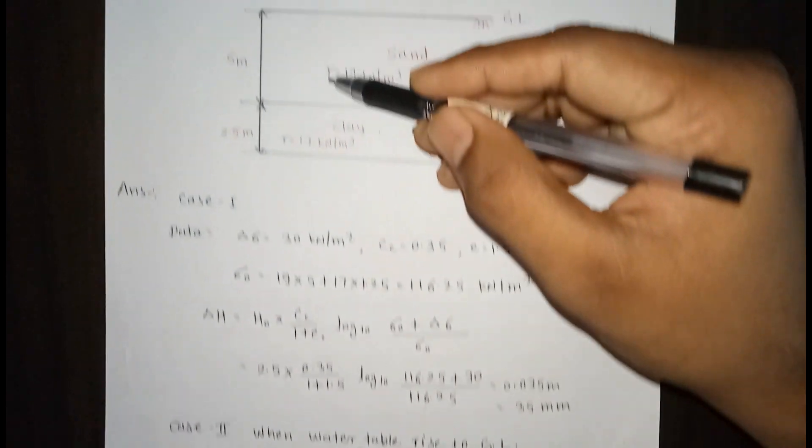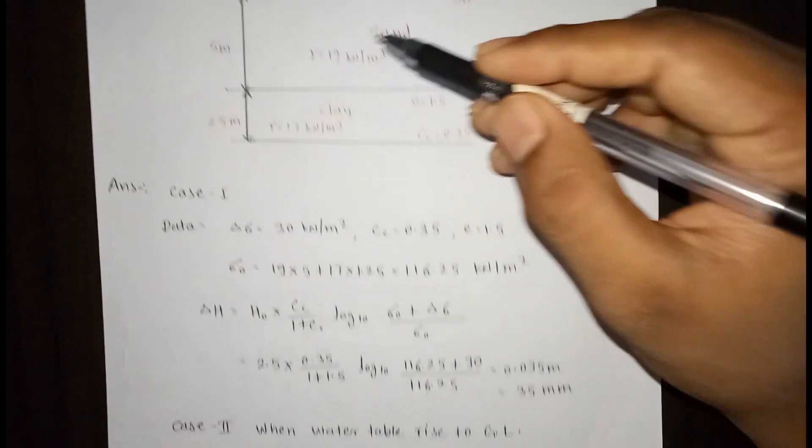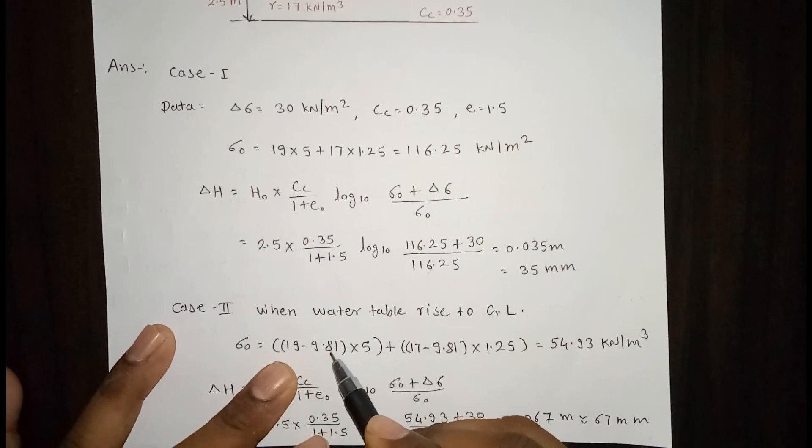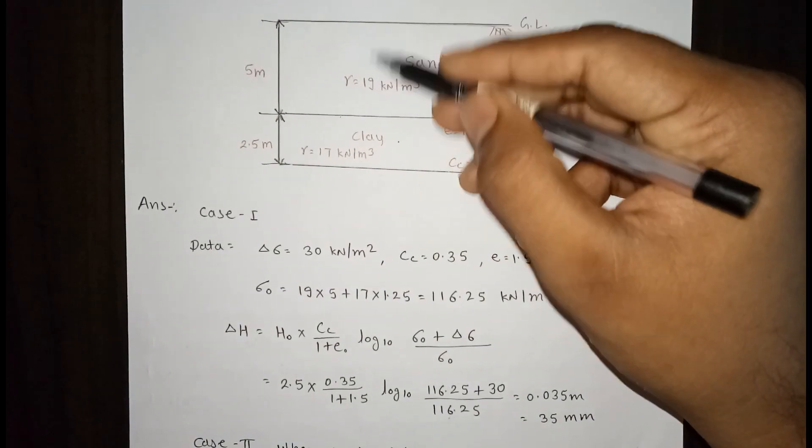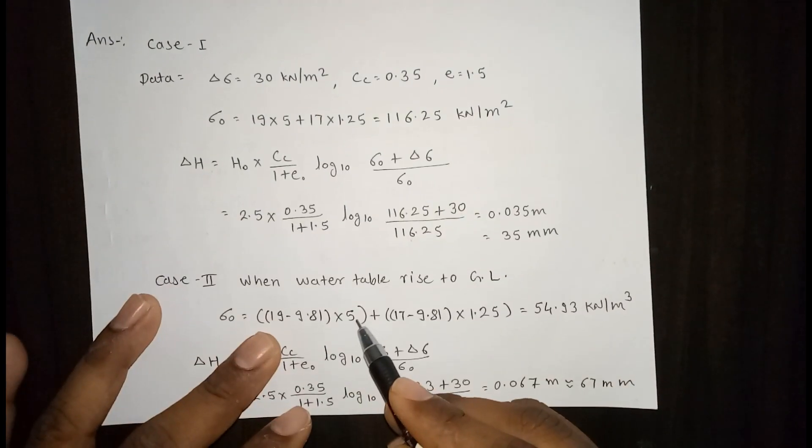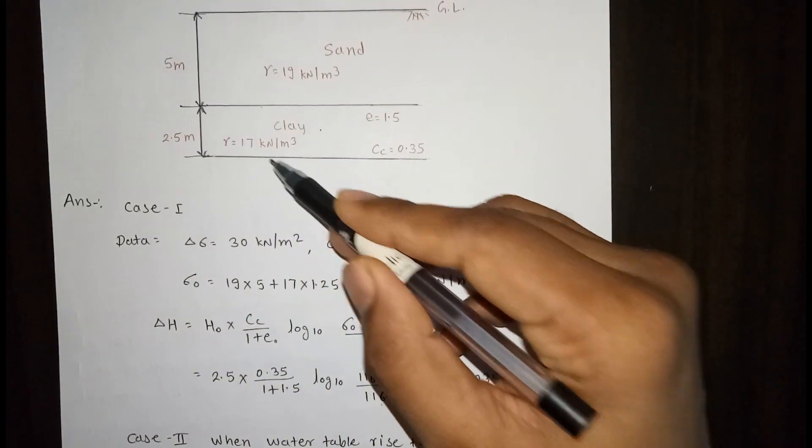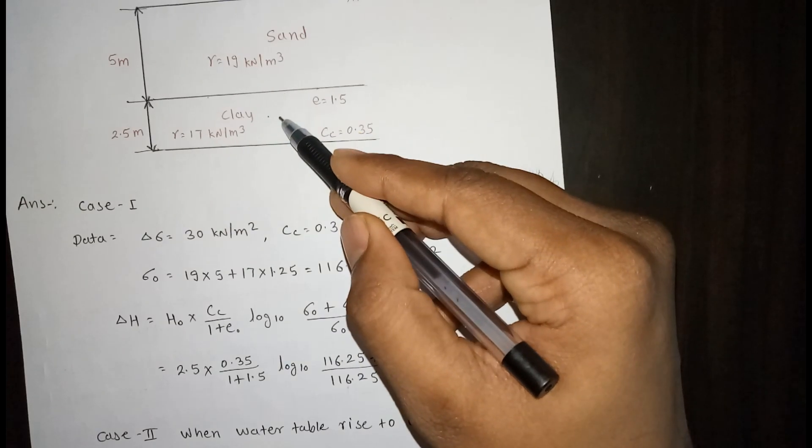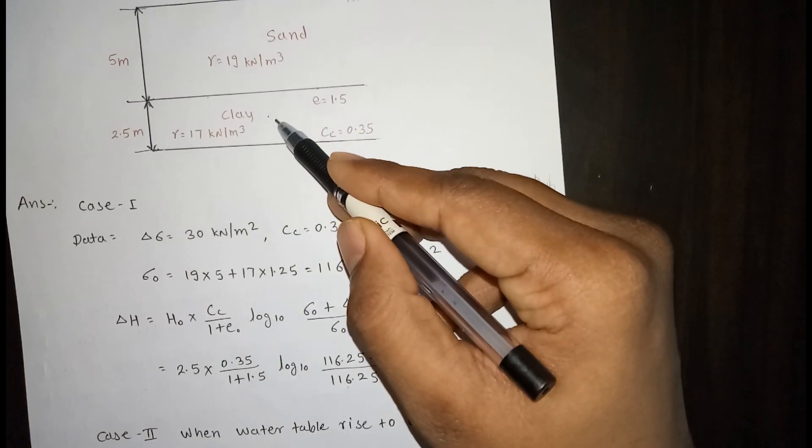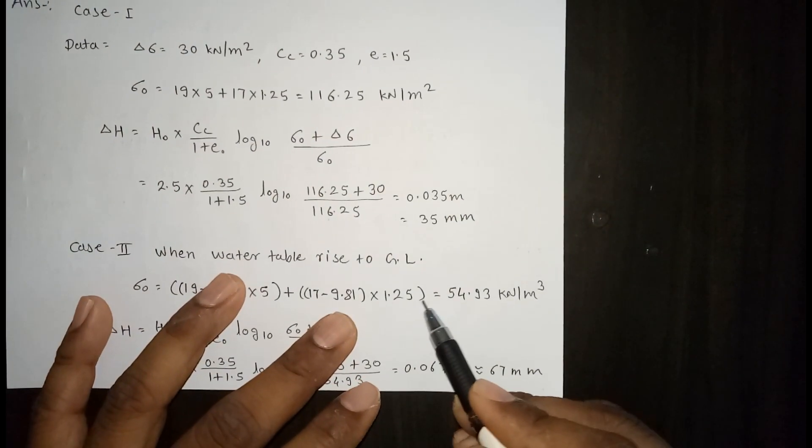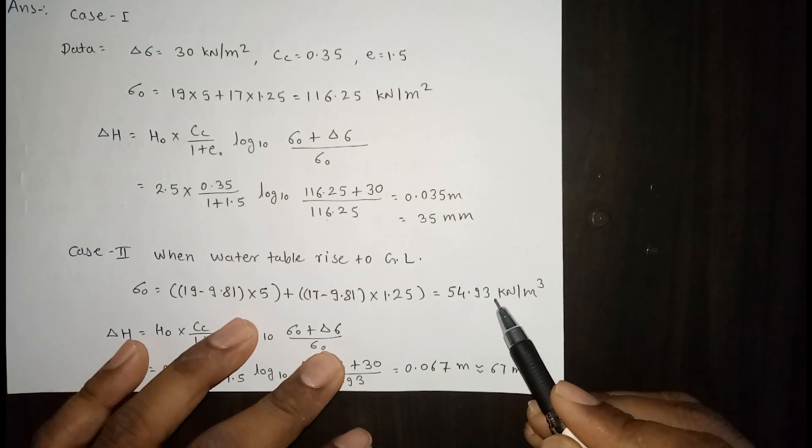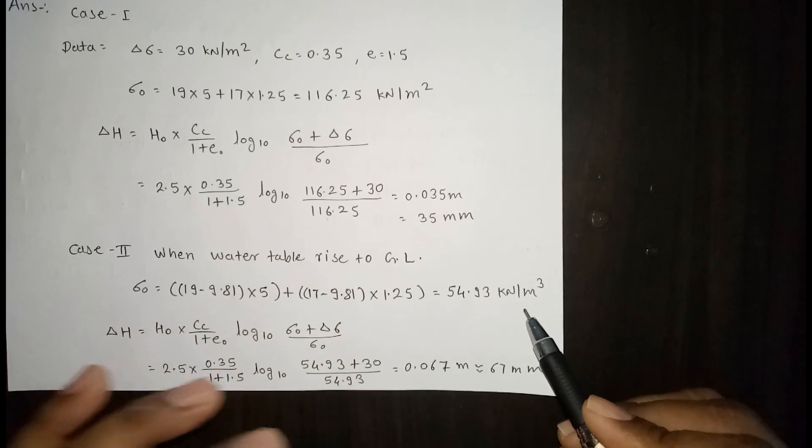So submerge equals gamma sat minus 9.81 times the depth of the sand layer is 5 meters, so 5 plus 17 minus 9.81 times 1.25 because we have to consider pressure till the center of the clay layer. So sigma 0 is equal to 54.93 kilonewton per meter square.